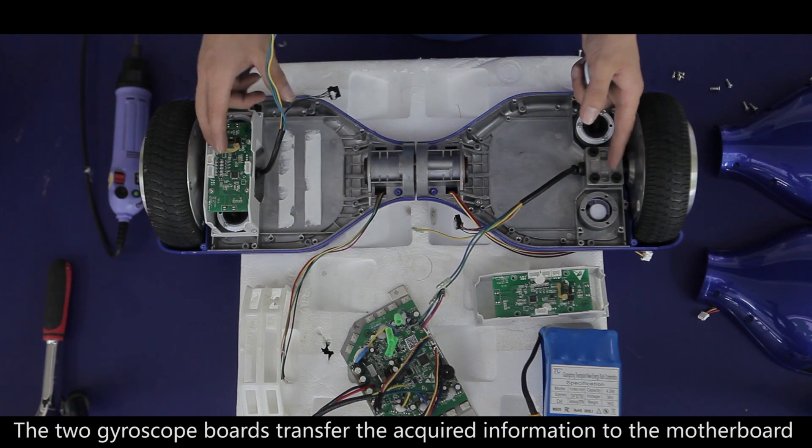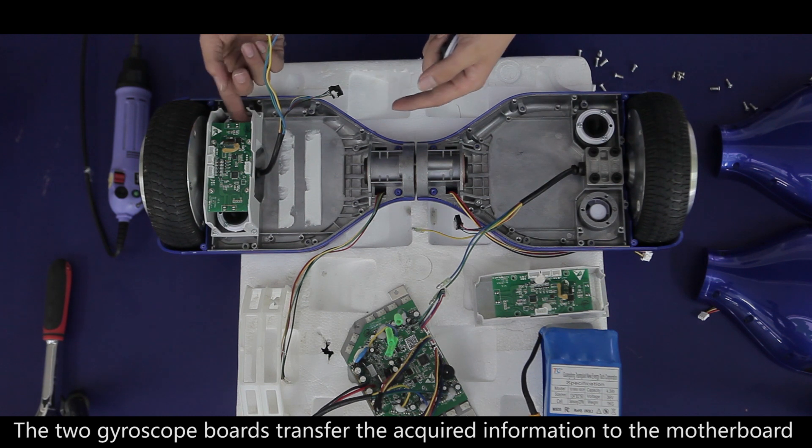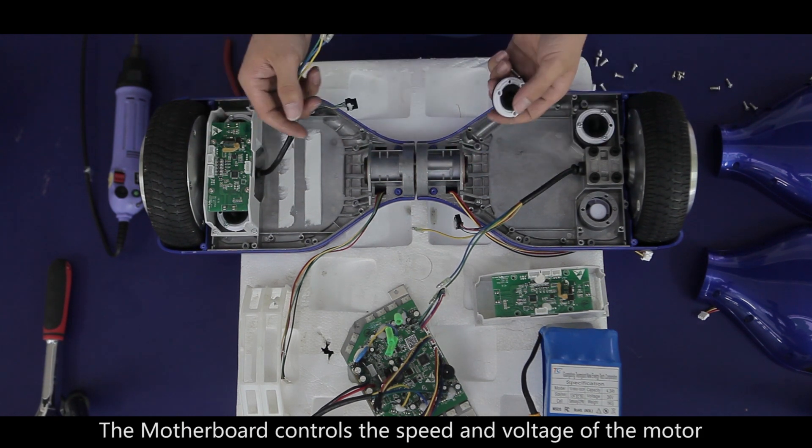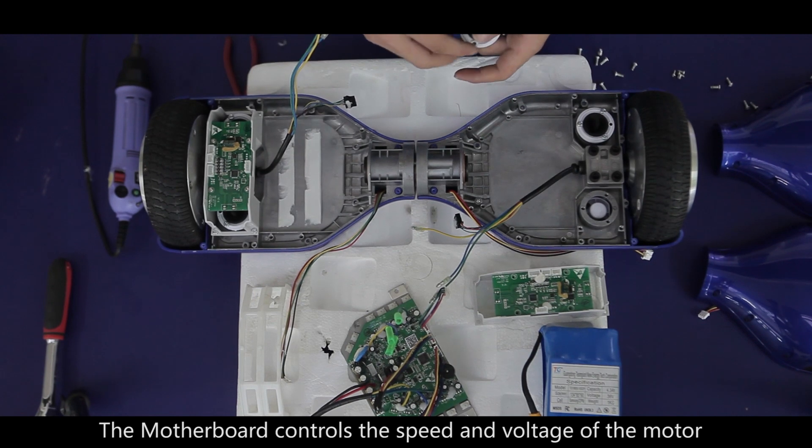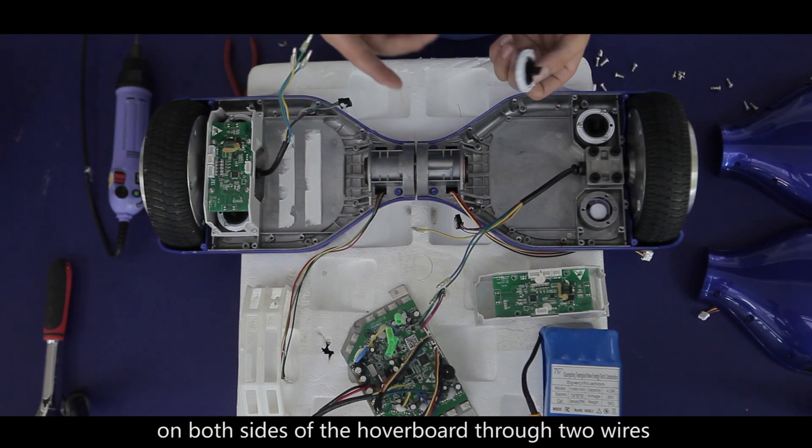The two gyroscope boards transfer the acquired information to the motherboard. The motherboard controls the speed and voltage of the motor on both sides of the hoverboard through two wires.